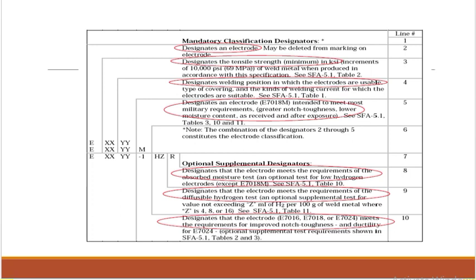'M' designates an electrode such as E7018M intended to meet most military requirements — greater notch toughness and lower moisture content as received and after exposure. 'Minus-1' designates that electrodes E7016, E7018, and E7024 meet the requirement for improved notch toughness at minus 10 degrees Celsius with 27 Joules. Minus-2 means minus 20 degrees, with 27 or 40 Joules. You need to check ASME Section 2 Part C for the specific impact notch toughness requirement at the required temperature.